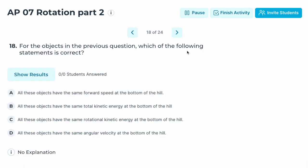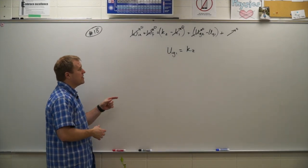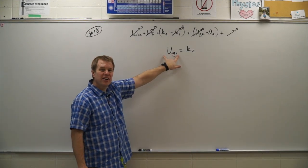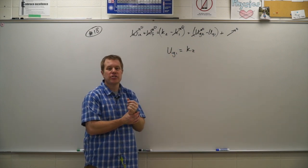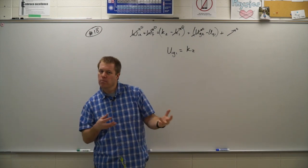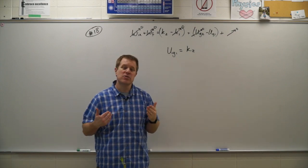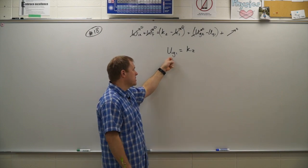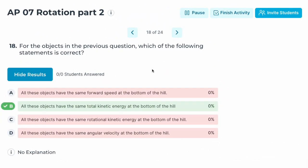Number eighteen: for the objects in the previous question, which of the following statements is correct? Because they all start with the same potential energy at the top, they all end with the same total kinetic energy at the bottom. The difference is just how that energy is divided between rotational and translational forms — that split determines who wins the race. Correct answer: B.